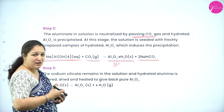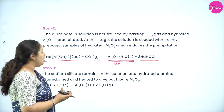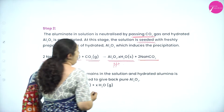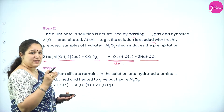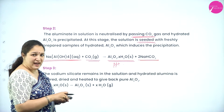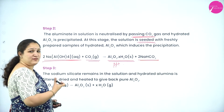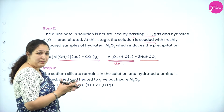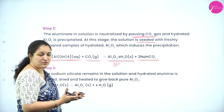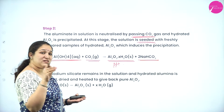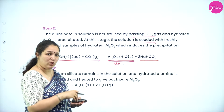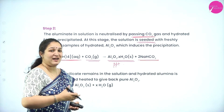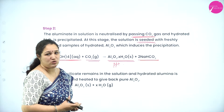To increase the rate of precipitation, we do something called seeding. Seeding means a small amount of already-formed aluminium oxide is added so that the rate of the reaction increases and the aluminium oxide precipitate forms faster.